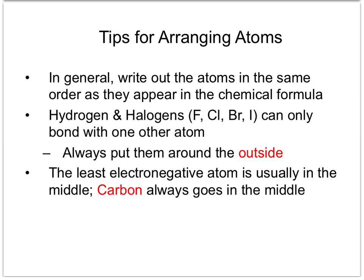There are some tips to arranging the atoms in the skeletal structure. First, write out the atoms generally in the same order as they appear in the chemical formula. Hydrogen and any halogen — group 7A elements: fluorine, chlorine, bromine, or iodine — can only bond with one other atom, so they can only be on the outside of that skeletal structure. The last tip is that carbon, if it's in the chemical formula, always goes in the center. If carbon is not there, it's usually the least electronegative atom that will go in the center.